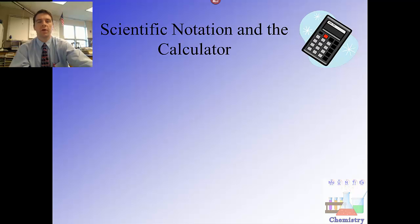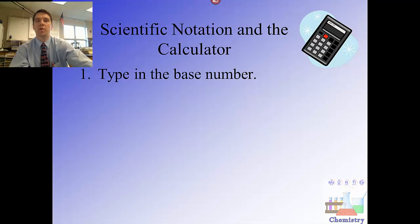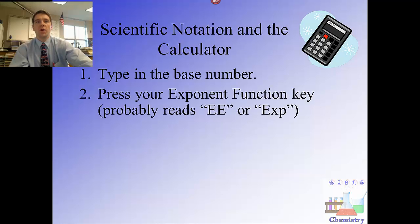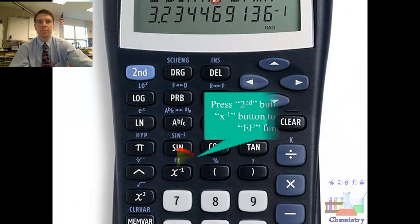There is a special function button that will cut down on a couple keystrokes. No matter which method you use, you're going to start by putting in the base number—remember that's the number that should be between 1 and 10. Once you put in that base number, the method that cuts down on some keystrokes is to use the exponent function. This is going to look like a double capital E labeled above the inverse key, which is above the 7 key on your calculator.